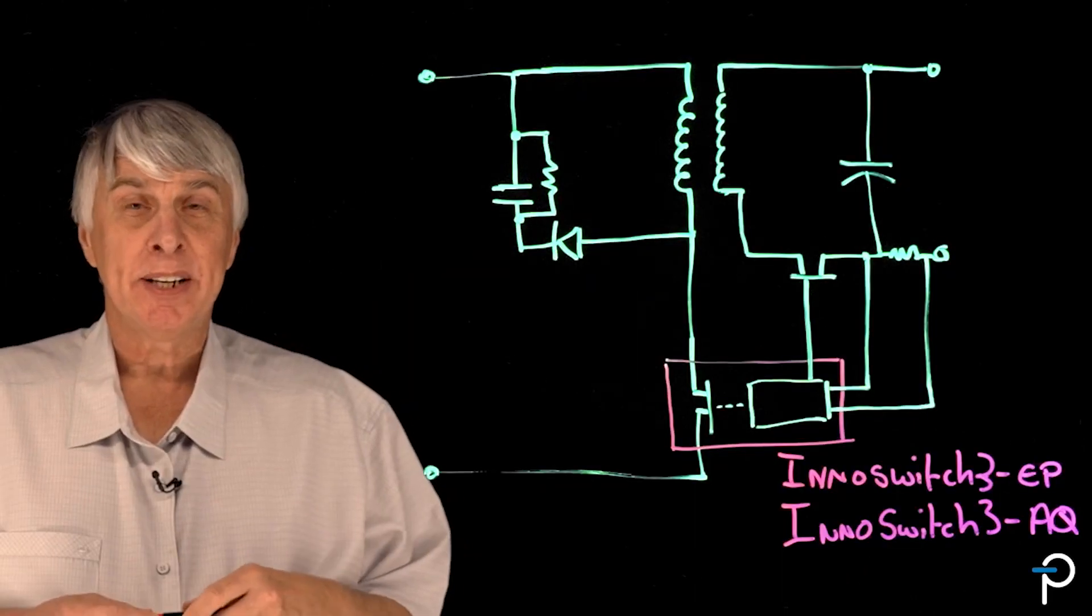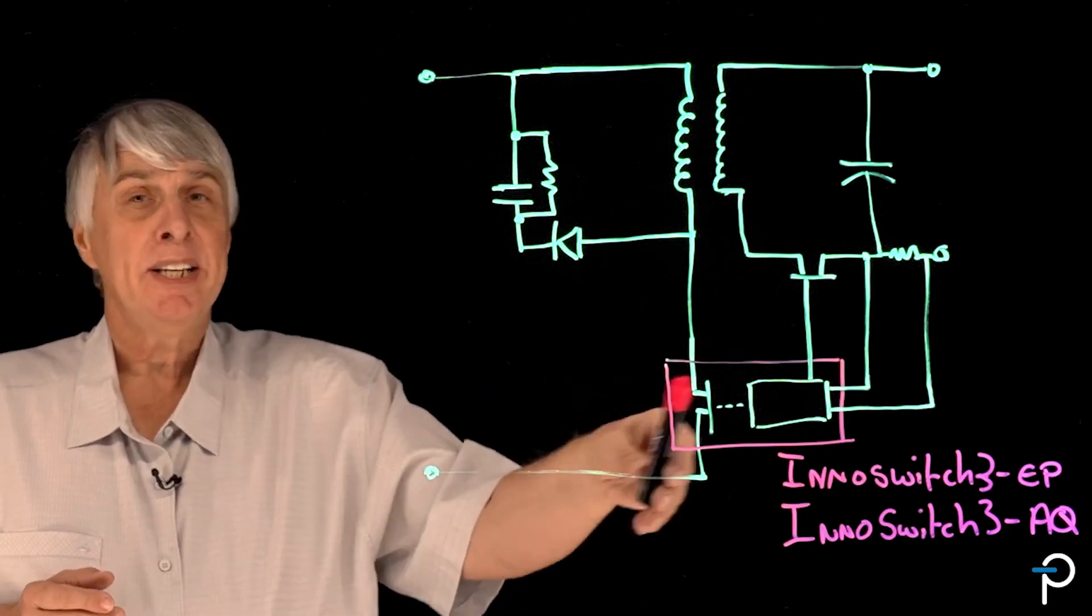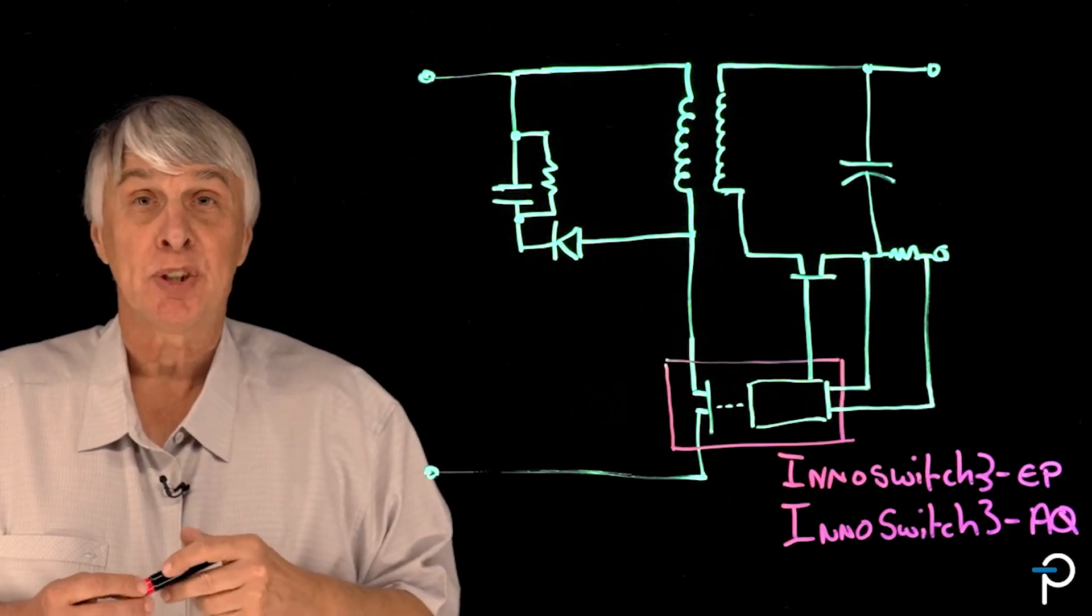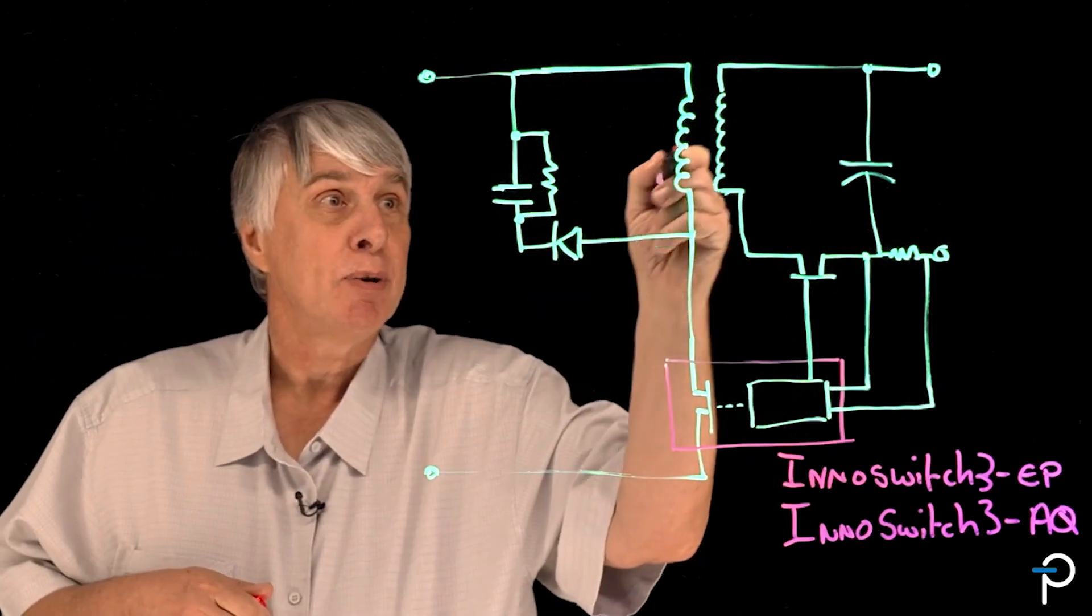In order to explain why we need 900 volt Power GaN, we need to look at the application. What I've sketched over here is a simplified version of an InnoSwitch3 Power Conversion IC circuit diagram for a flyback converter. Let's finish that diagram off.